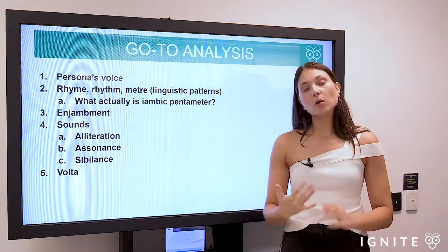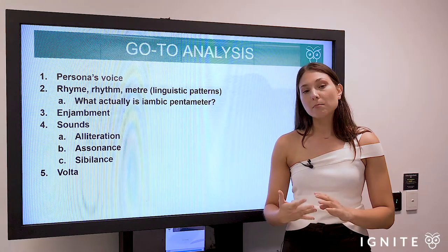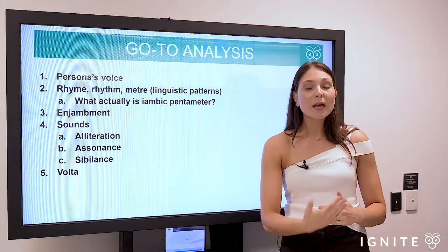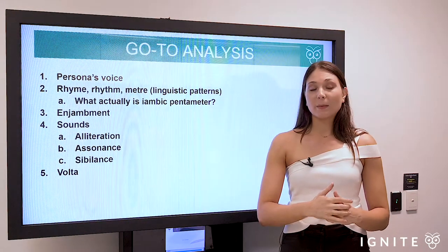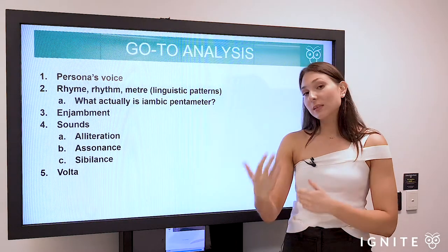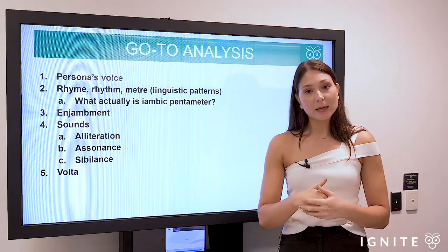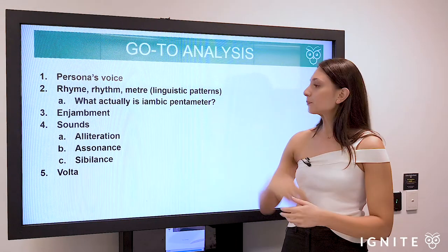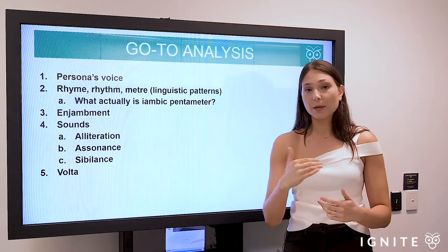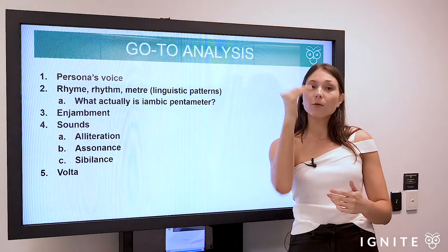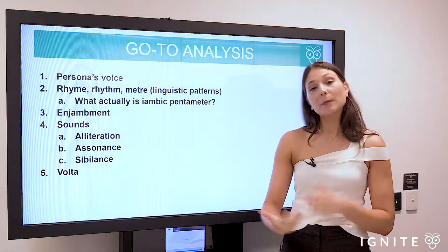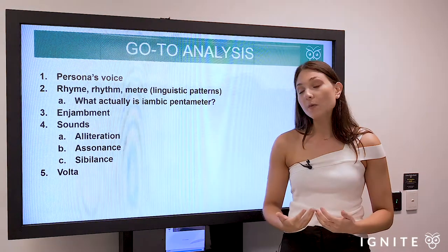We're then going to consider rhyme, rhythm, and meter — is there a particular rhythm used throughout the poem, is there a particular linguistic pattern (that being meter), and we'll see if that implicates the meaning being conveyed. We'll also keep a look out for enjambment — that's when we have one line moving on to the next without any punctuation — and whether that implicates the flow of the text.